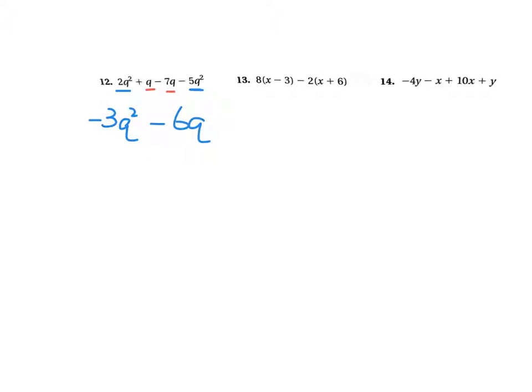The next one has distributive again. So I'm going to distribute the 8 through there. It would be 8 times x minus 8 times 3. And again, there's a negative 2 here in front. So I'm going to actually distribute a negative 2. So negative 2 times x is a minus 2x. Negative 2 times 6 is a minus 12. Look for your like terms. There's a like term. There's a like term. 8x minus 2x is 6x. Negative 24 minus 12 is negative 36. That's as far as you can go.